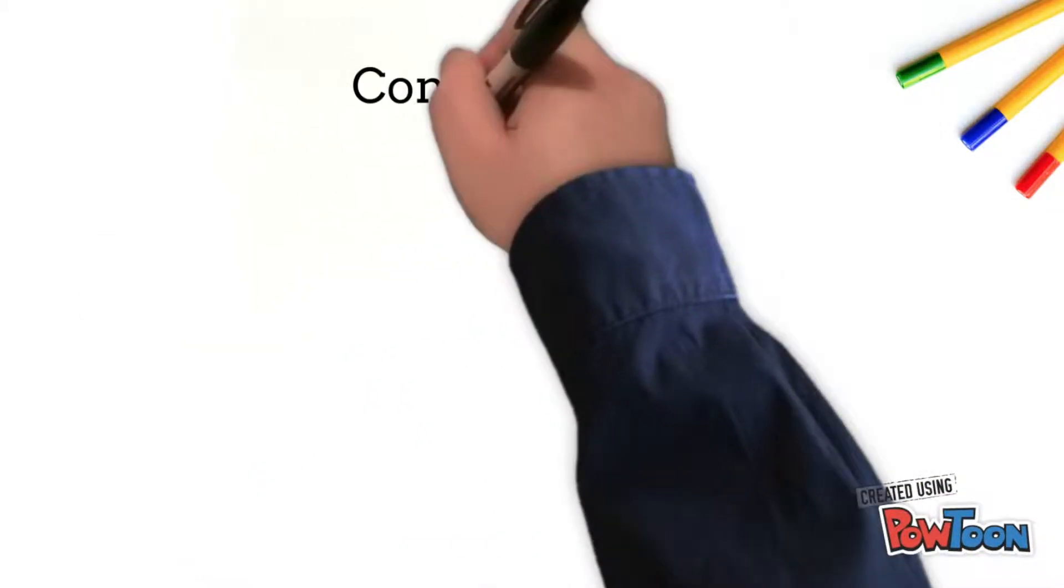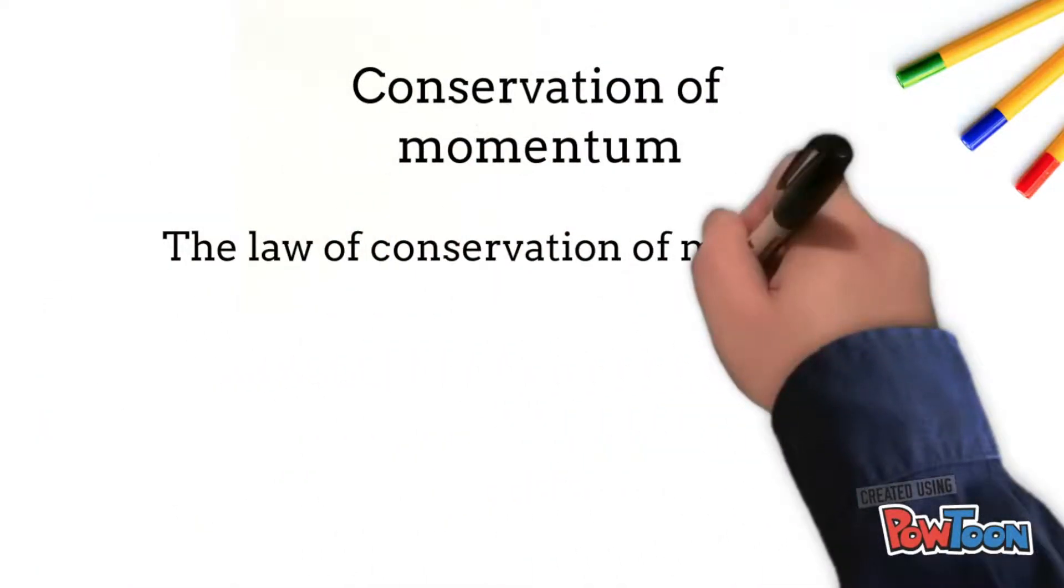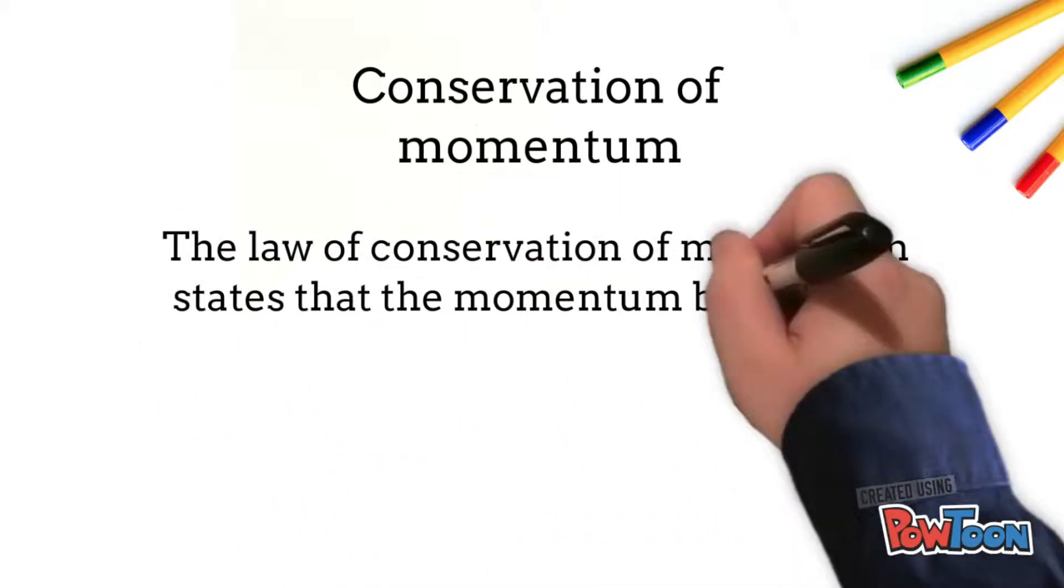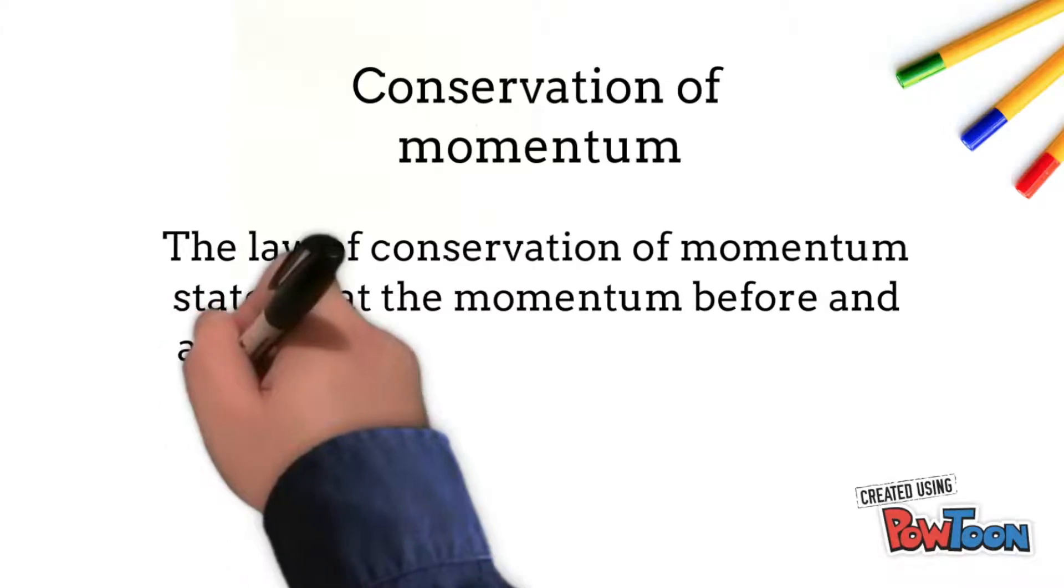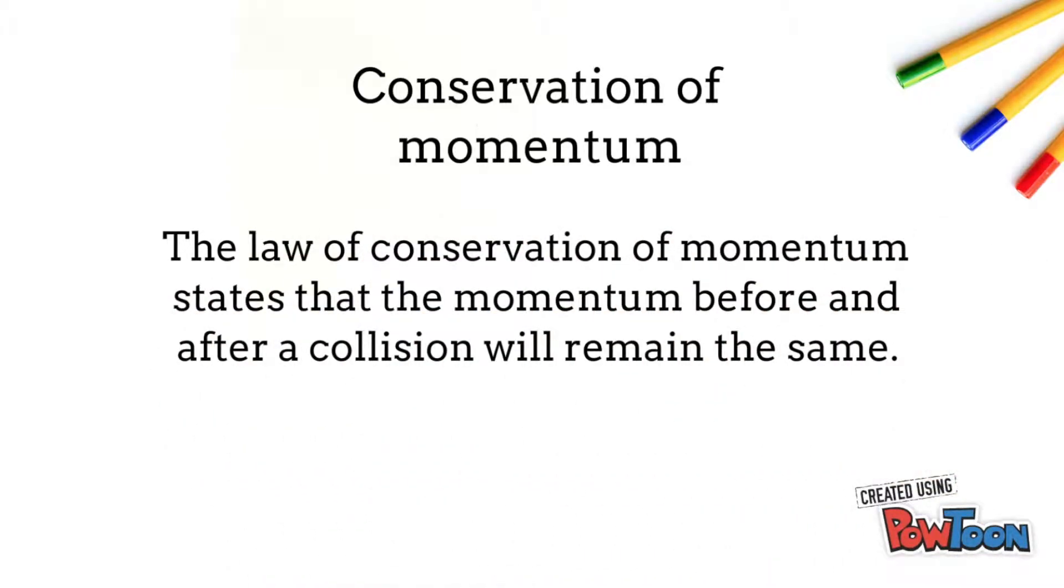The law of momentum conservation can be stated as follows. For a collision occurring between object 1 and object 2, the total momentum of the two objects before the collision is equal to the total momentum of the two objects after the collision. The momentum lost by object 1 is equal to the momentum gained by object 2.